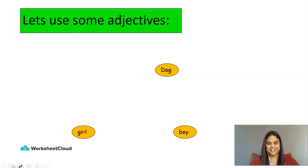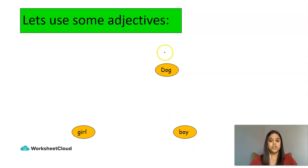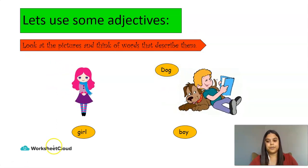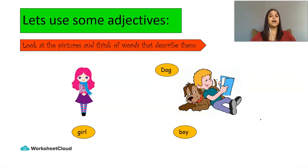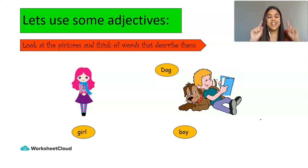Let's use some adjectives! In this part of the lesson, we are going to look at two pictures with three main nouns in them — a boy, a dog, and a girl. Look at the pictures and think of words that describe them. I'm going to leave these two pictures on the screen for a little bit, Grade Threes, and I want you to look at them and then think or write down, or shout out, all the words you can think of that tell us more about those two pictures.